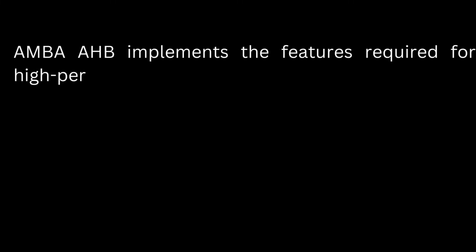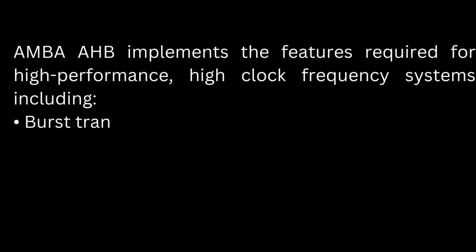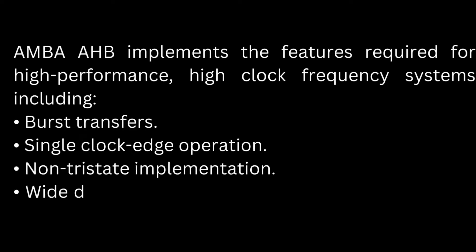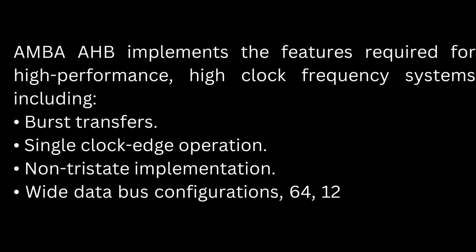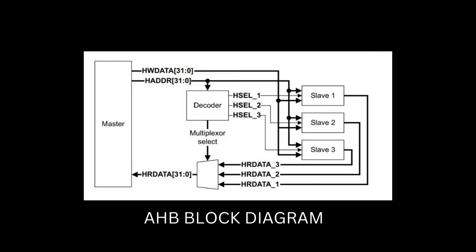AMBA AHB implements the features required for high-performance, high-clock frequency systems including burst transfers, single-clock edge operation, non-tri-state implementation, and wide data bus configurations of 64, 128, 256, 512, and 1024 bits. The most common AHB slaves are internal memory devices, external memory interfaces, and high-bandwidth peripherals.